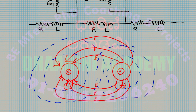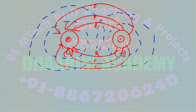In the previous session we looked at the parameters related to two-wire transmission lines. Because of certain features, we can bring in the fundamental circuit elements such as resistance, capacitance, inductance, conductance, etc.